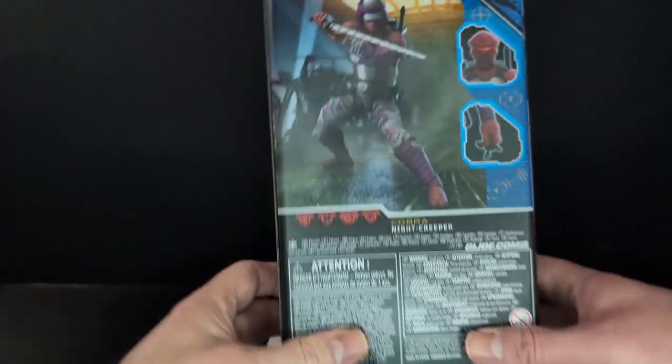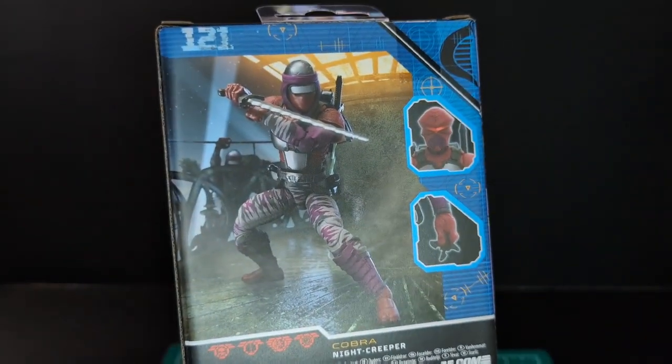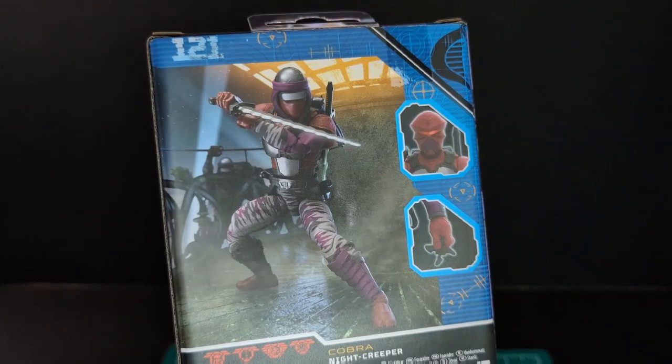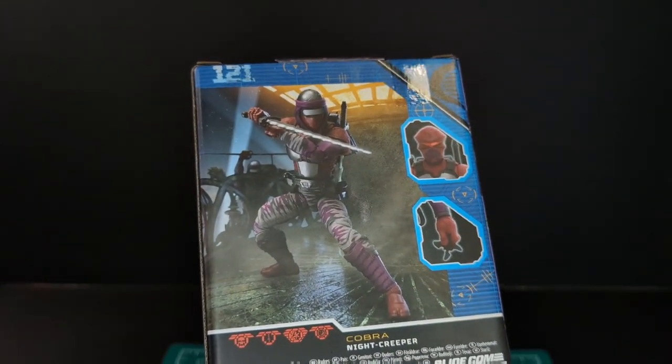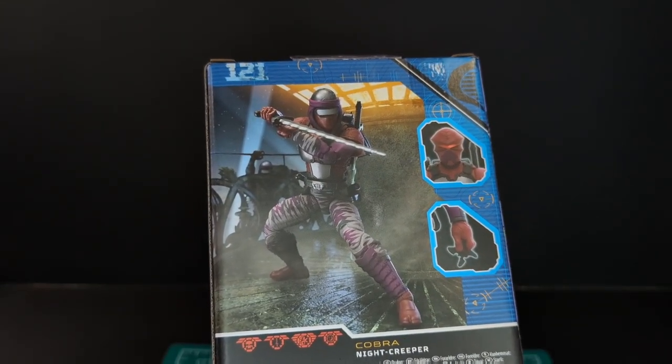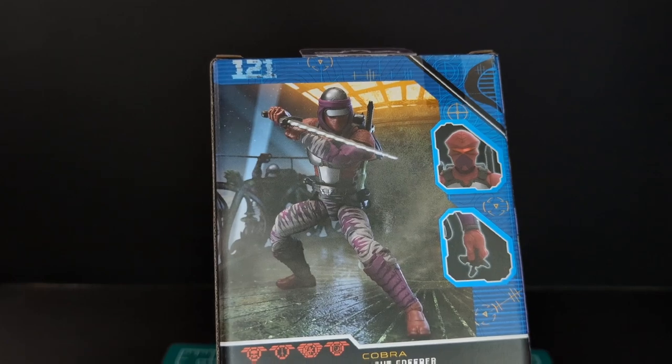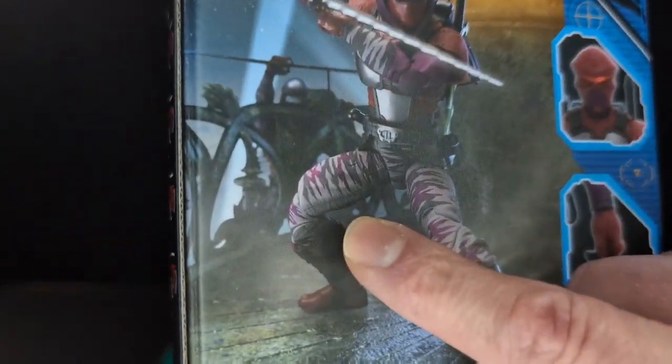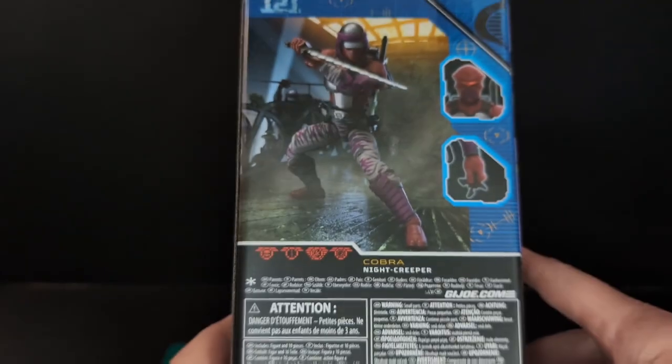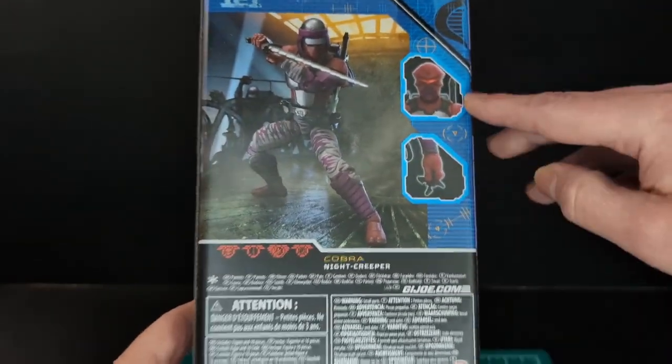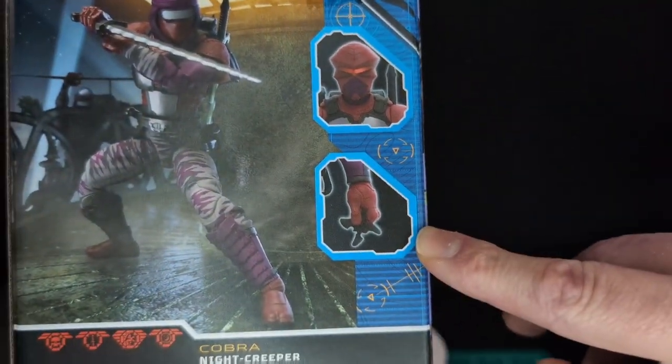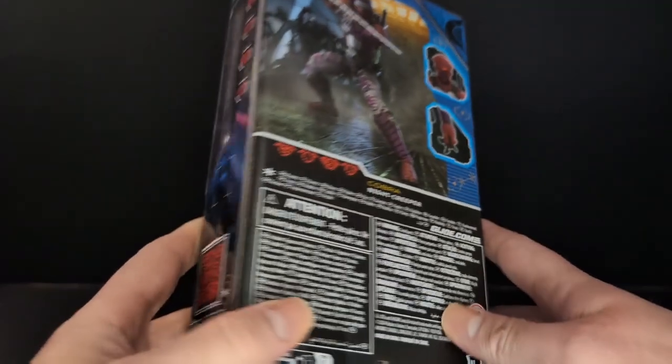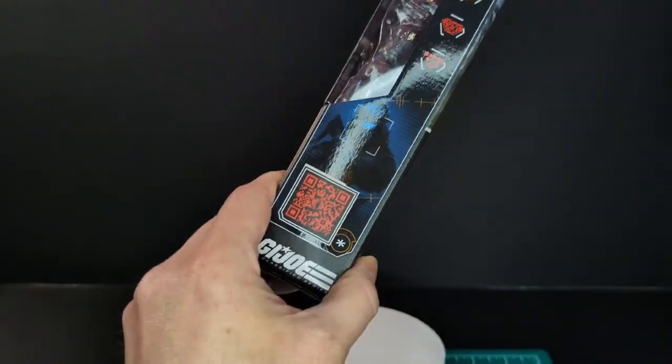Cobra logo on the top and on the back of the packaging here you see the Night Creeper holding his sword. I'm not exactly sure where he is located. There are lights at the top here and it looks like maybe there's a helicopter in the background. It's a little blurry but we got zoom in aspects of the figure right here. We got boring stuff on the bottom, got a QR code.